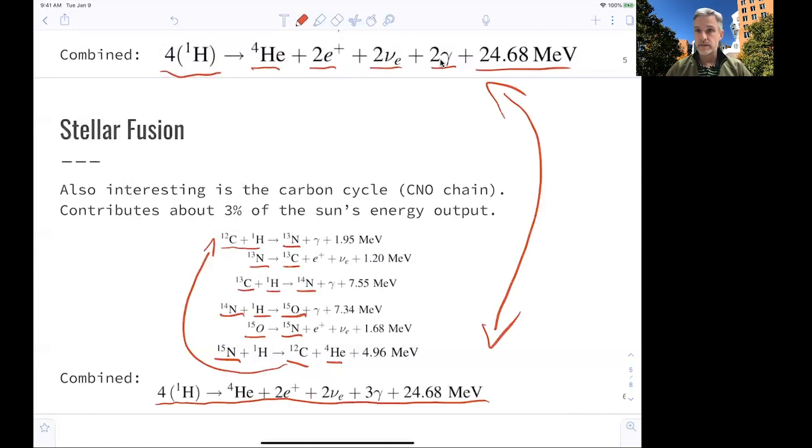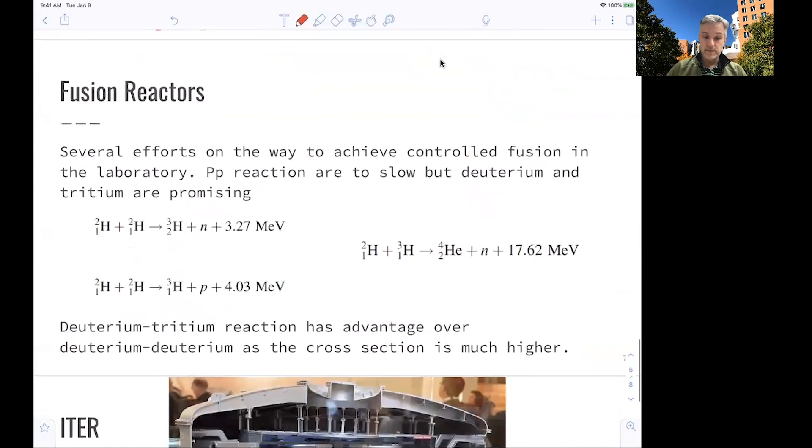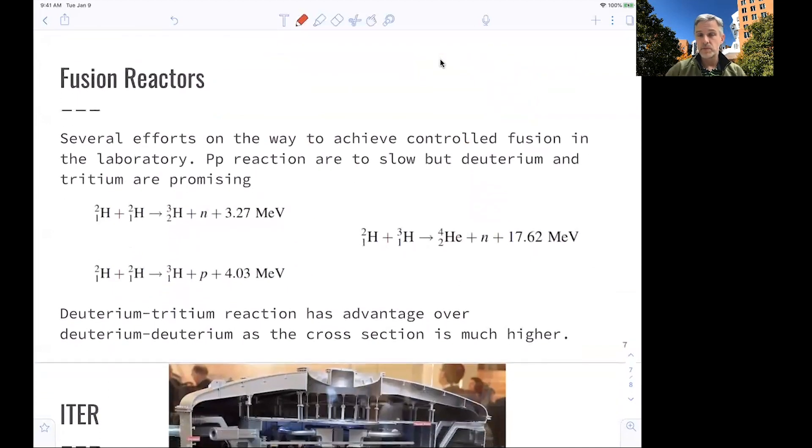So we have seen that we do two things. We create heavier forms of matter starting from hydrogen, and we produce energy. And so this is the energy production mechanism within the sun. This is nice. You start with hydrogen or deuterium. Those are two elements which are very abundant, and you produce energy.